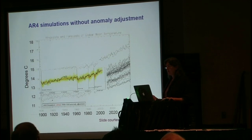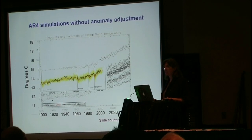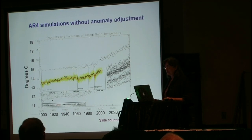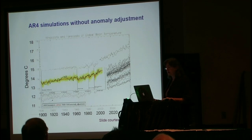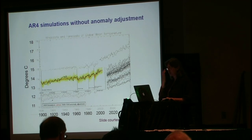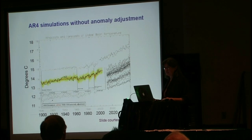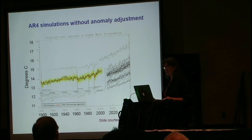If you look at the AR4 simulations without the anomaly adjustment, you get quite a different picture. This is a figure from Tony Smith — if you actually look at the global average temperature, not the anomalies, you see that there's a range of 3 to 3.5 degrees centigrade. If I would have seen this, I would not have been quite as impressed by that agreement.